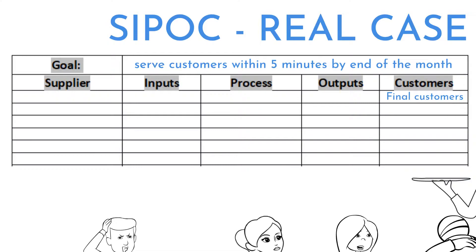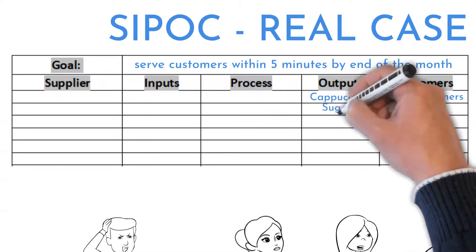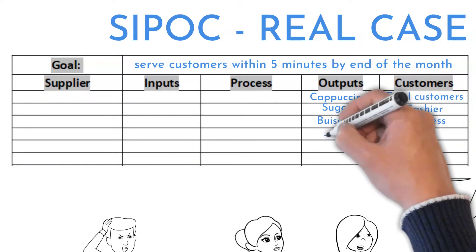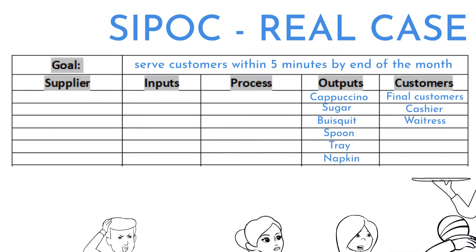Customers can be: final customers, cashier, and waitress. The waitress is a customer because she takes the coffee to the final customer. The cashier is listed because they need to know when the order is finished. Outputs customers are expecting: cappuccino, sugar, biscuit, spoon, tray, and napkin. Cappuccino, sugar, and biscuit are served by the coffee machine operation; the rest is done by the waitress.